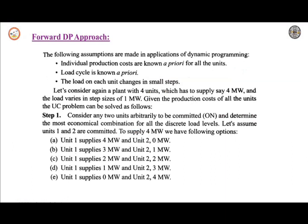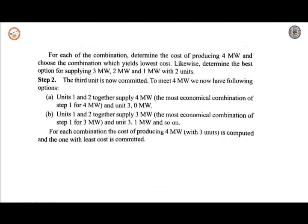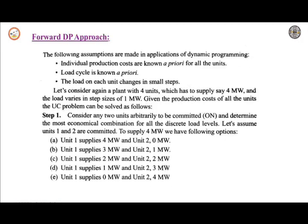These are the three assumptions in the dynamic programming method — specifically the forward dynamic programming approach, which is one of the best approaches for the unit commitment solution. In this forward dynamic programming approach, the following assumptions are made: individual production costs are known, and the load cycle is known.